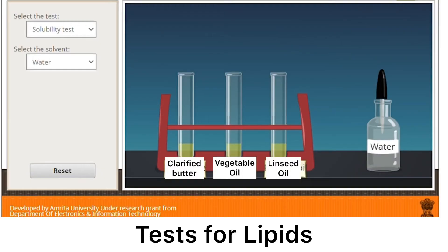Now that you are ready, we can start with the experiment. Our first test is the solubility test. Here, we are going to test for the solubility of lipids with different solvents. First, set up your test tubes and label the lipids that you will be using. The first test tube contains clarified butter, the second contains vegetable oil, and the last contains linseed oil for our refined oil.